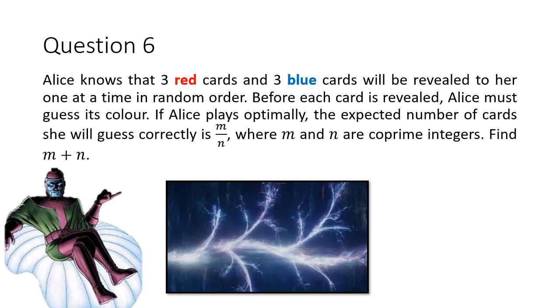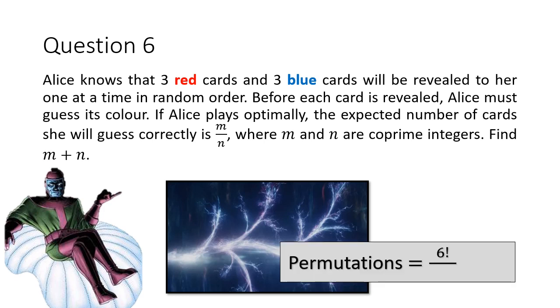So since we have 6 cards in total, there will be 6 factorial permutations. But don't forget, you have to divide by all the identical permutations. So since you have 3 red cards, and if you permutate the 3 red cards with one another, there is no difference. So you've got to divide by 3 factorial for the 3 red cards, as well as 3 factorial for the 3 blue cards. Therefore, if you calculate this, you'll get 20 possible timelines.